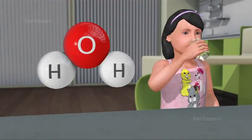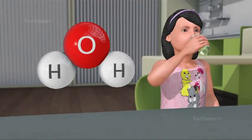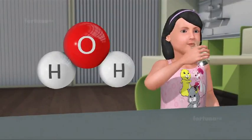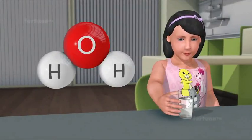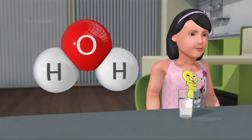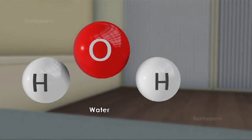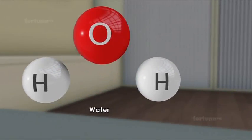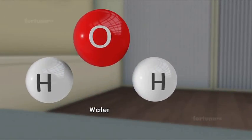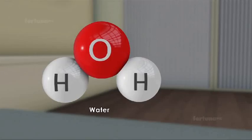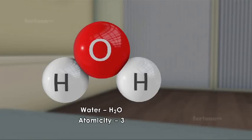The water we drink is made of 2 different atoms: hydrogen and oxygen. Water has 2 hydrogen atoms and 1 oxygen atom, so we have the well-known formula H2O. The atomicity of water is 3.